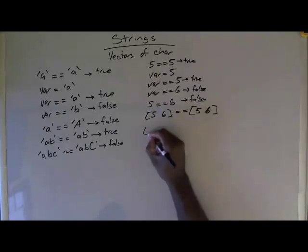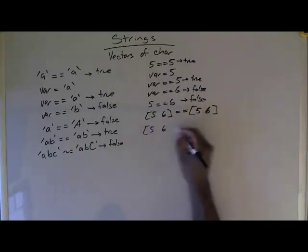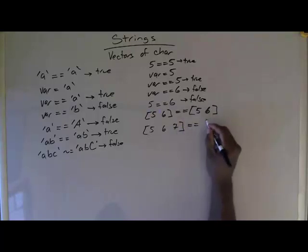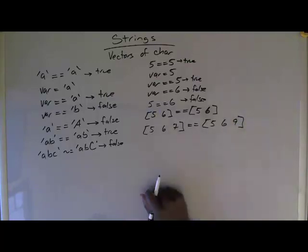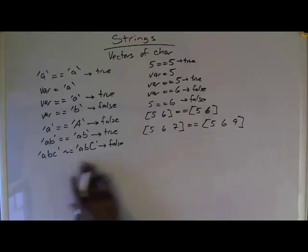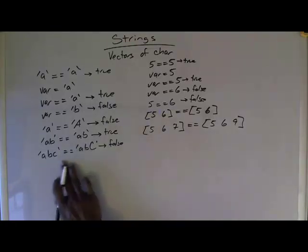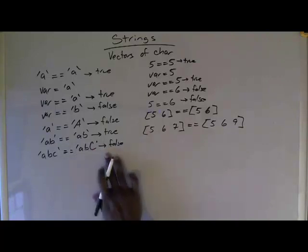And then I could ask does vector 5, 6, 7 equal vector 5, 6, 9. And that would give me false. Oops, I made a mistake over here. This is false because ABC equals AB capital C is false.